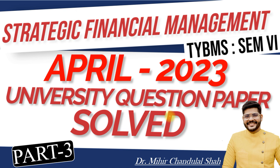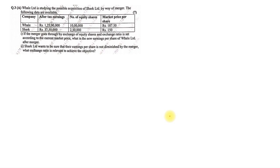There were a couple of sums which were pending to be solved, so in this video we are going to solve those sums. Question number 3a was pending, which was based on merger. The question states that Whale Limited is studying the possible acquisition of Shark by way of merger. The following data are given: profit after tax for Whale is 1 crore 25 lakhs and for Shark is 37 lakh 50,000. Number of equity shares are 10 lakh and 2 lakh 50,000 respectively.